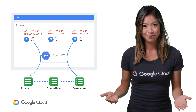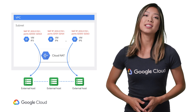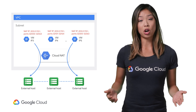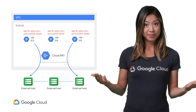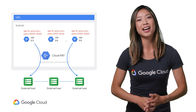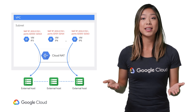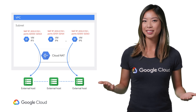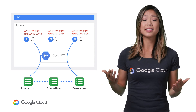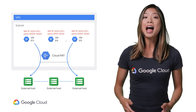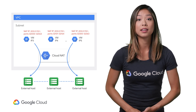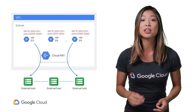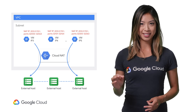The best part? It doesn't use a proxy. Instead, each of your internal instances is given a unique set of NAT IPs and port ranges, which are used by Andromeda, Google's network virtualization stack, to perform NAT. This means no choke points, better scalability, performance, and availability. Cloud NAT scales seamlessly with the number of instances and the volume of network traffic, and you get as much bandwidth as instances that do have external IP addresses.